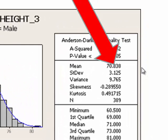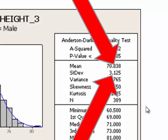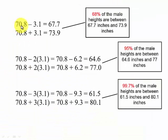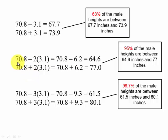The sample mean rounded to one decimal place is 70.8 inches, and the standard deviation is 3.1 inches. According to the empirical rule, the mean plus and minus one standard deviation gives 67.7 and 73.9, meaning 68% of the males' heights are between 67.7 and 73.9 inches. Going two standard deviations above and below the mean — 70.8 minus 2 times 3.1 and 70.8 plus 2 times 3.1 — gives 64.6 and 77, so 95% of the males' heights are between 64.6 and 77 inches.